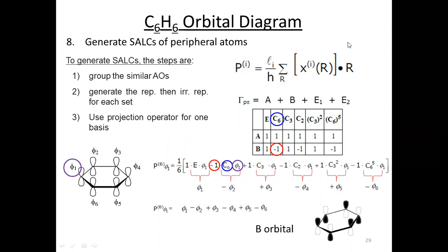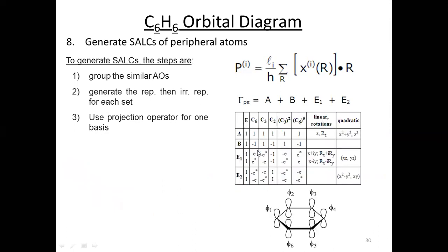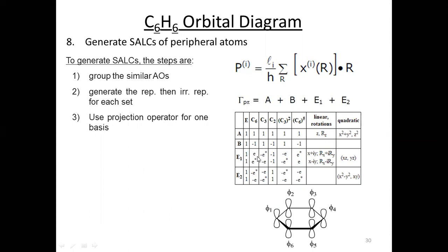Students, till now we have solved the symmetry-adapted linear combinations for the benzene molecules for the A and B orbitals. So next is to solve the representations for E1 and E2. But in the case of E1 and E2 representations, we have some imaginary functions — you can see epsilon here, minus epsilon star here — along with real numbers. So it is not as simple as the A and B representations.